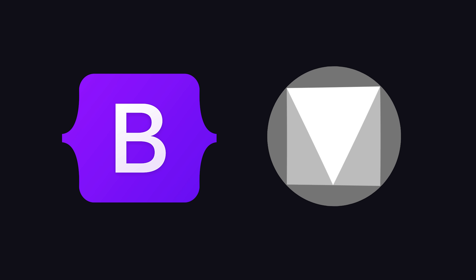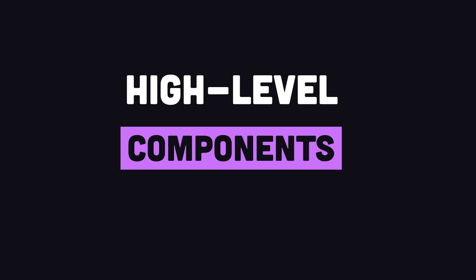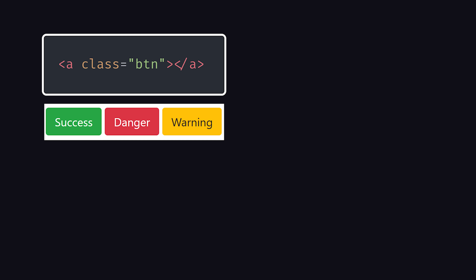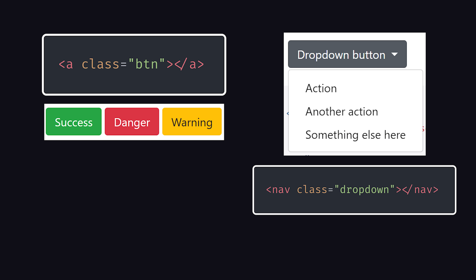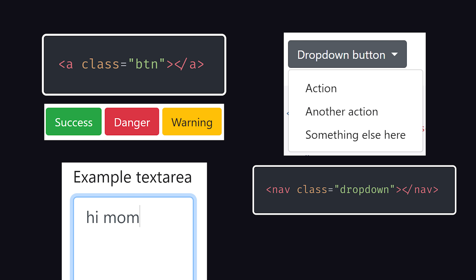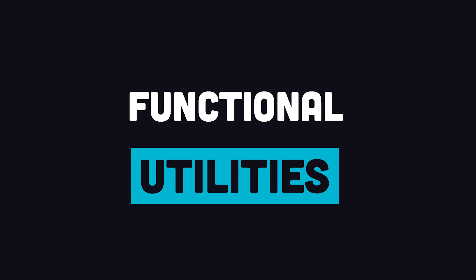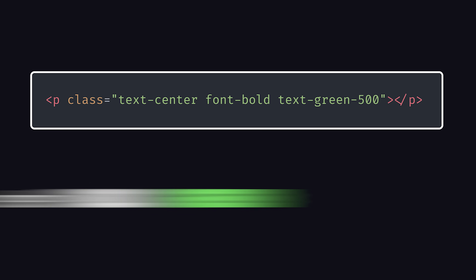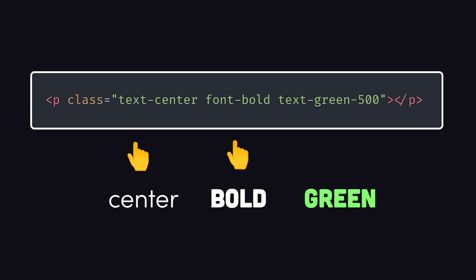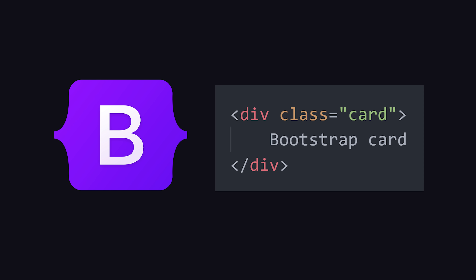Frameworks like Bootstrap and Material address this challenge by creating styles for high-level components — things like buttons, dropdowns, and forms. Tailwind takes a more functional approach by providing utility classes that can be composed together to build components like this. Instead of using the card class like you might in Bootstrap,